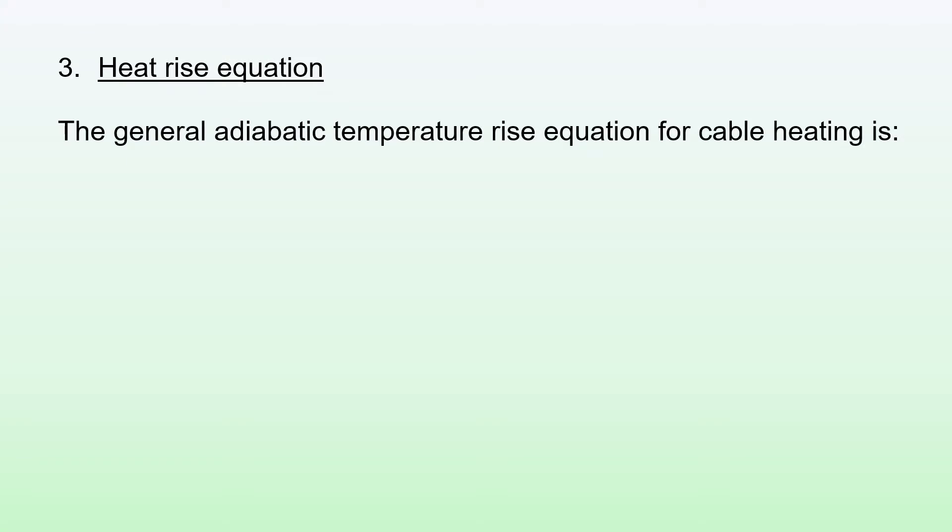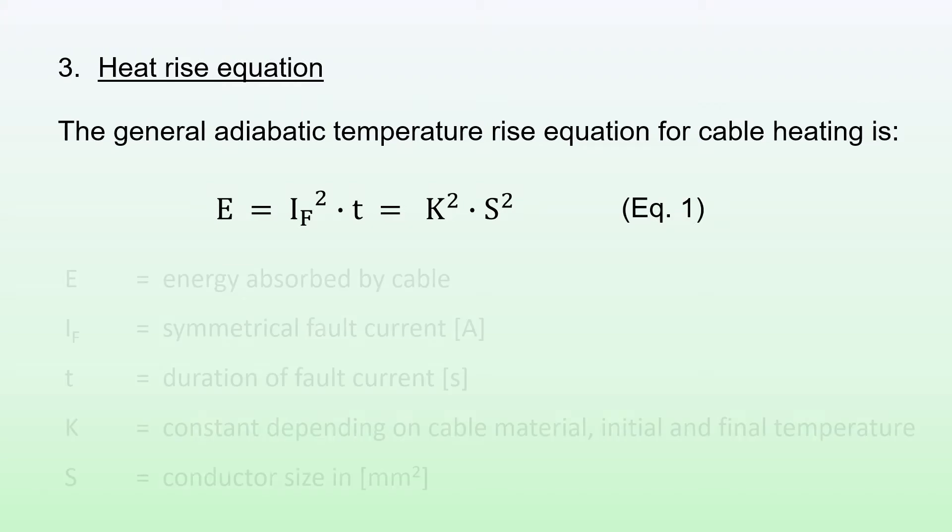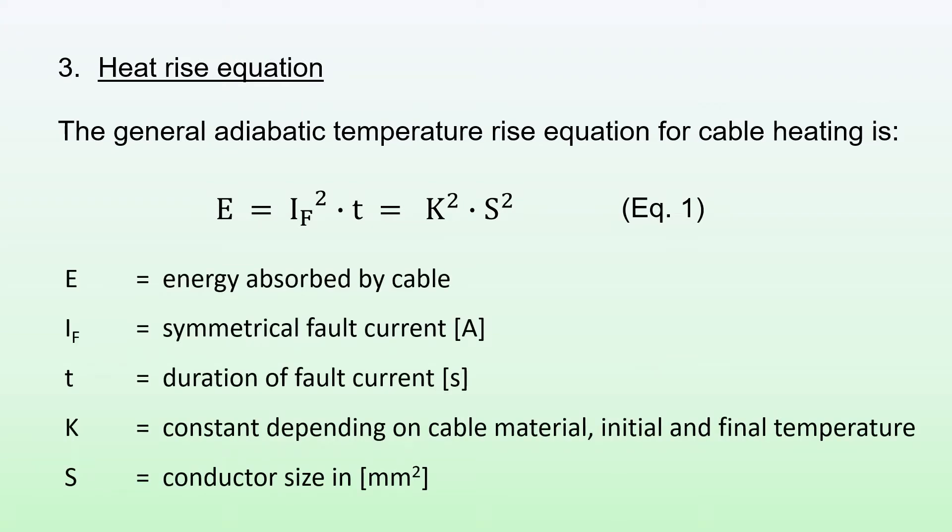Now looking at the heat rise equation, the general adiabatic temperature rise equation for cable heating is E equals If squared times t, which equals K squared times S squared. That's equation 1. E is the energy absorbed by cable, If is the symmetrical fault current in amps, t is the duration of the fault current in seconds, K is the constant depending on cable material, initial and final temperature, and S is the conductor size in millimeters squared.